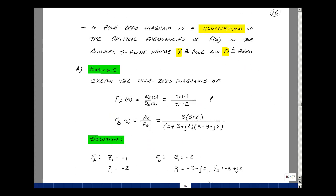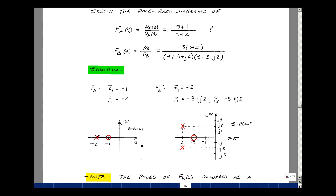A pole-zero diagram is a visualization of these critical frequencies in the complex s-plane. We're going to use an x for a pole and an o for a zero. Let's sketch the pole-zero diagrams of these two functions: (s+1)/(s+2), and 3(s+2)/[(s+3+j2)(s+3-j2)].